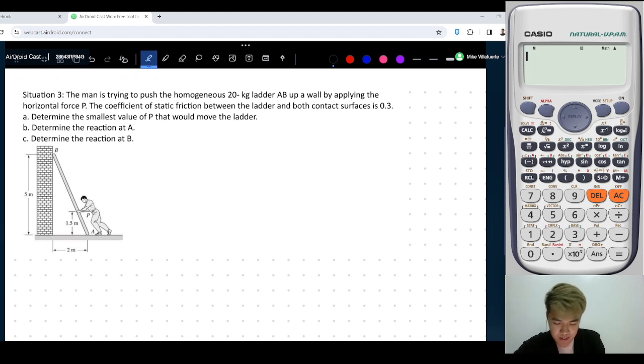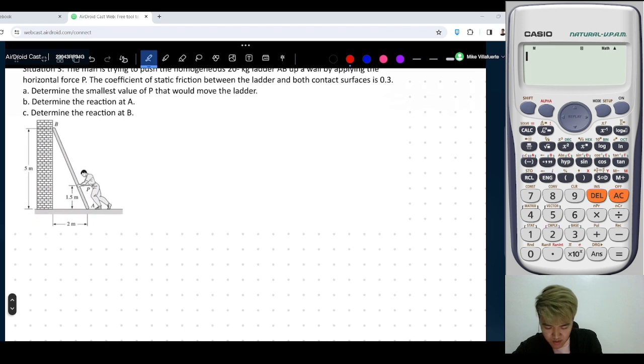So first step, draw the free body diagram. So assume you're comfortable drawing free body diagrams. First, you have a normal at A. Then you have a normal at B. And then, the motion of the ladder is going to the left. So that means the motion of the ladder at the bottom is going to the left. So the friction force at A, which is equal to 0.3 NA, opposes that.